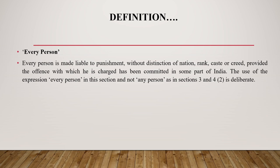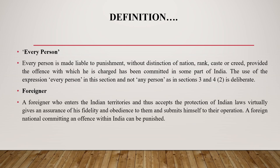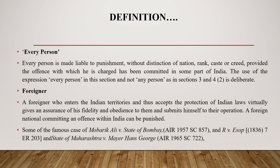The crime must be committed within the territory of India by Indians. The next term is 'foreigner.' A foreigner who enters Indian territory thus accepts the protection of Indian laws, virtually giving an assurance of his fidelity and obedience to them. That means a foreign national committing an offence within India can be punished. The leading cases related to this are Mubarak Ali v. State of Bombay, R v. Esau, and State of Maharashtra v. Mayor Hans George. In these cases, foreigners who committed crimes in Indian territory were held liable because the crime was committed within the territory of India.